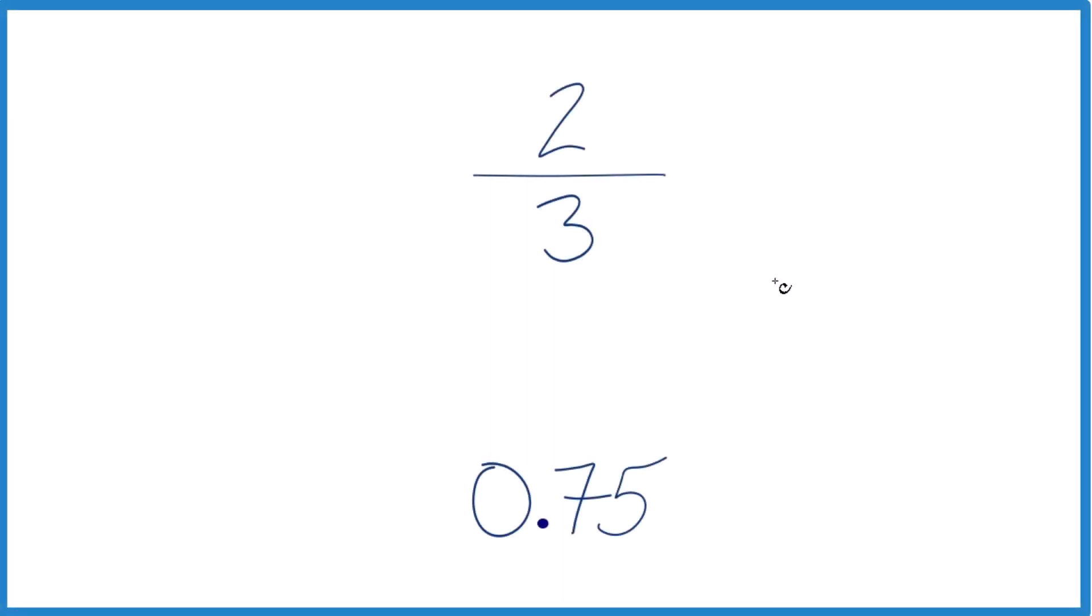So how do you tell which is larger, two-thirds or 0.75? We have our fraction two-thirds and our decimal 0.75.